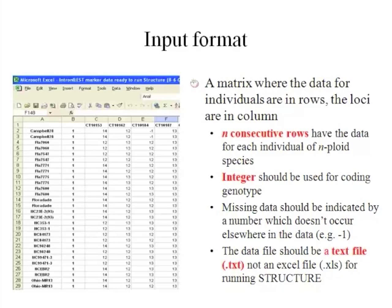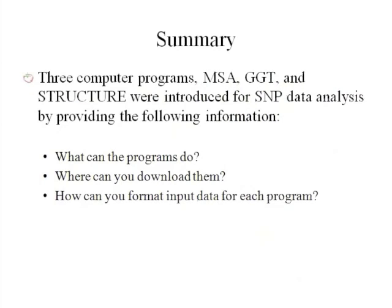The Structure input data is a matrix where the data for individuals are in rows and markers are in columns. Two consecutive rows have the data for each individual of diploid species. Like MSA, Structure doesn't accept letter coding, so you should have numerical coding for SNP markers. Missing data can be indicated by a number that doesn't occur anywhere else in your dataset. Finally, save your input data as a text file.